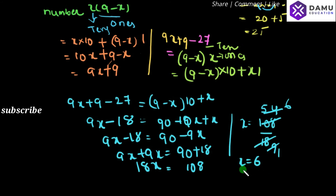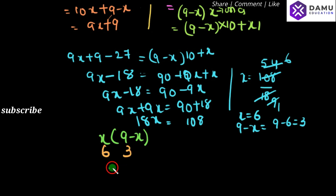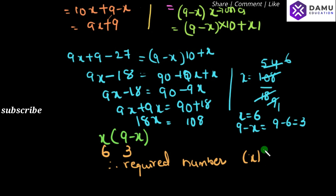So x is equal to 6. Our assumed number was x followed by (9 minus x). Since x is 6, then 9 minus x equals 9 minus 6, which is 3. Therefore the required number is 63. Thanks for watching, please subscribe.